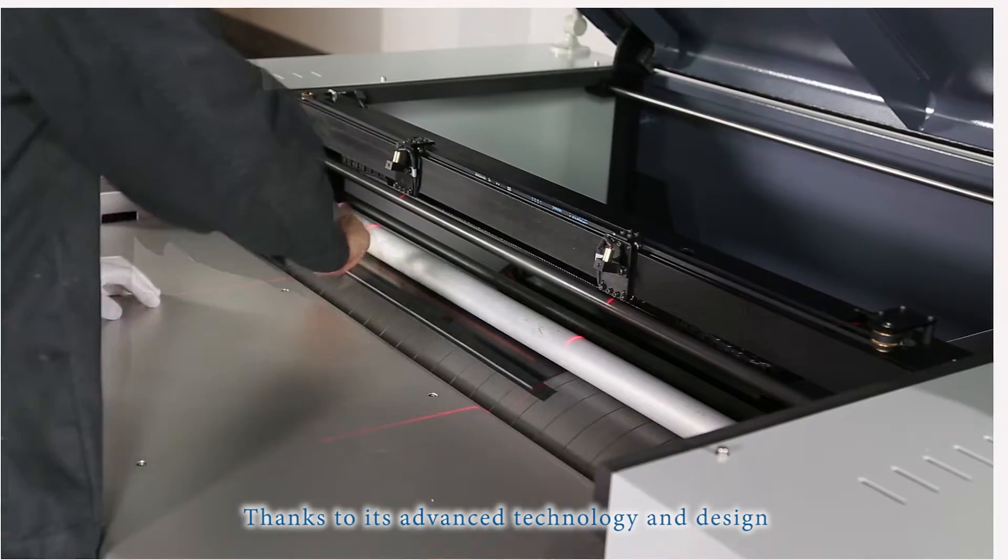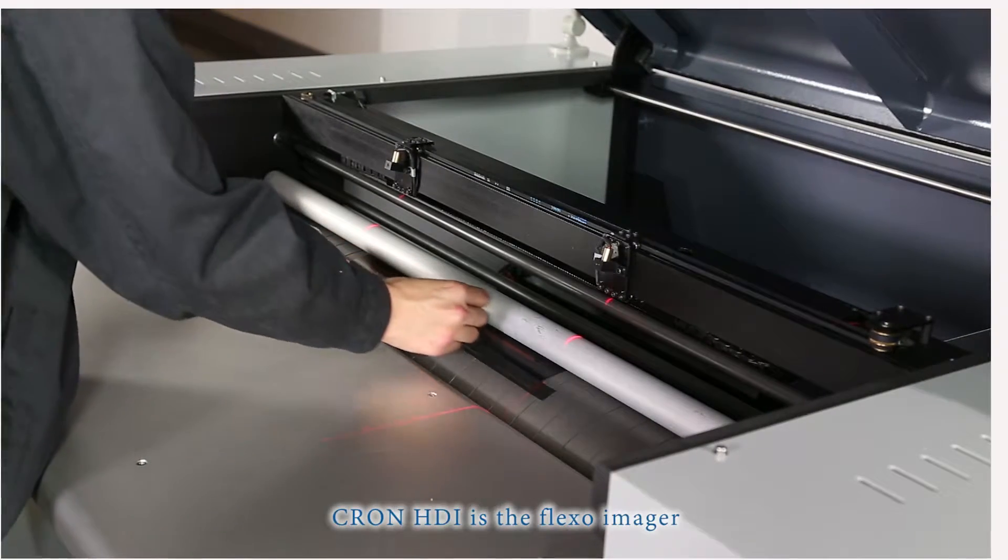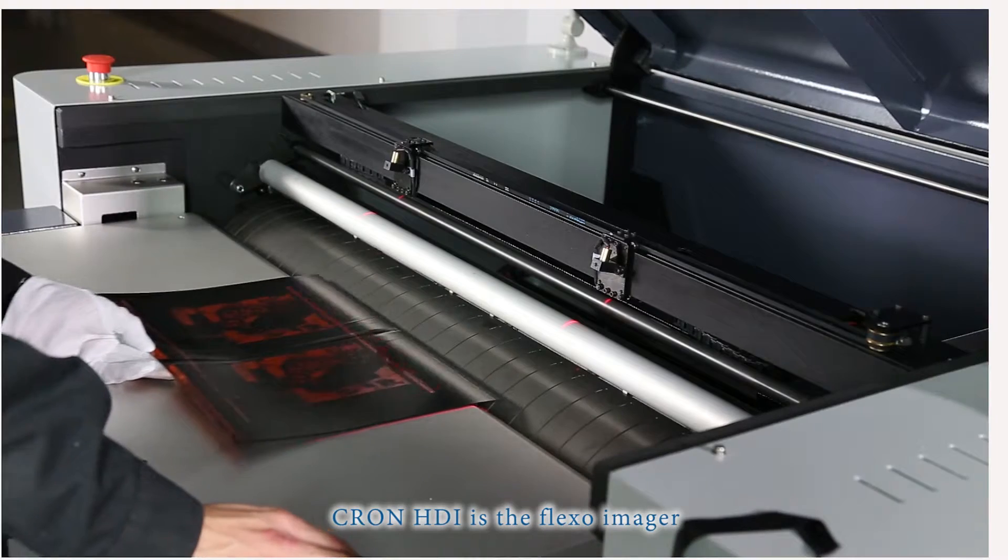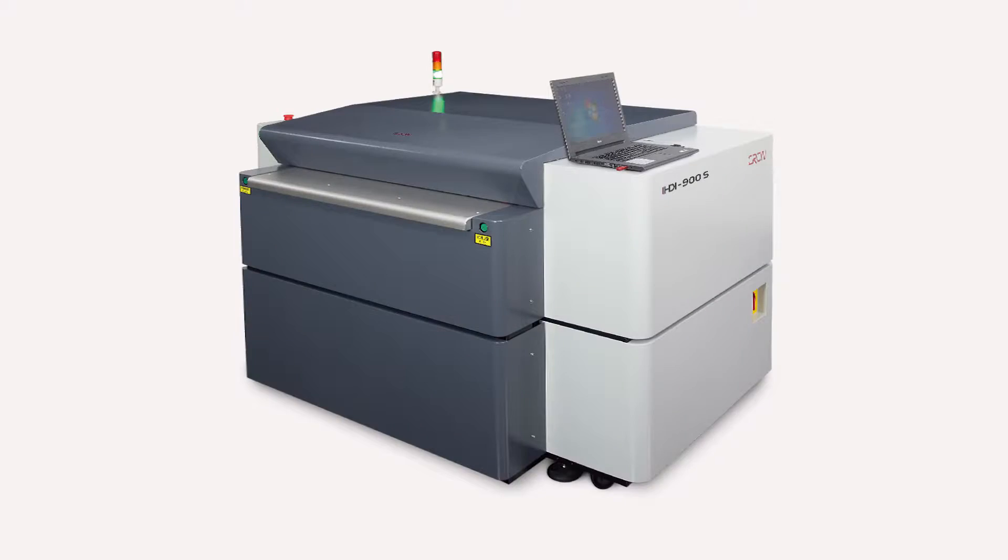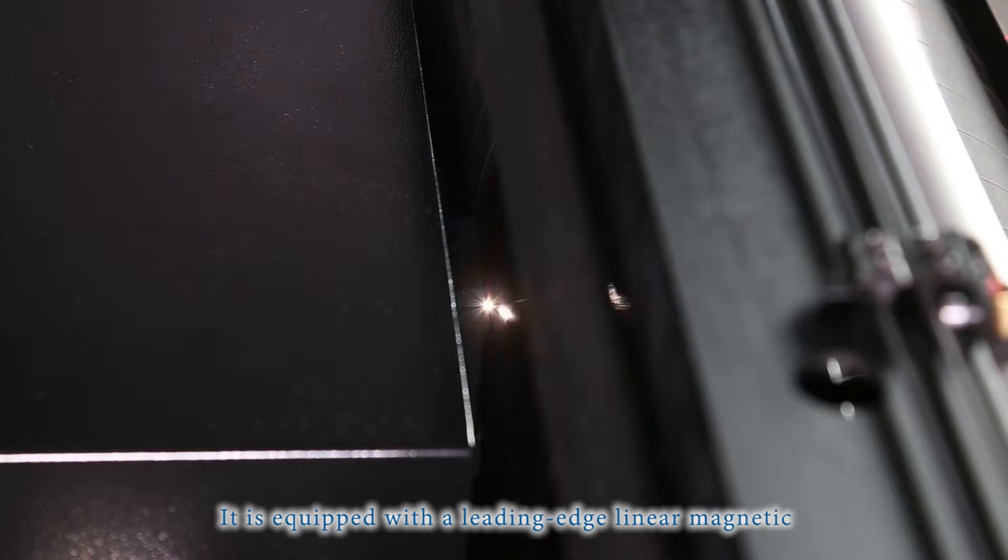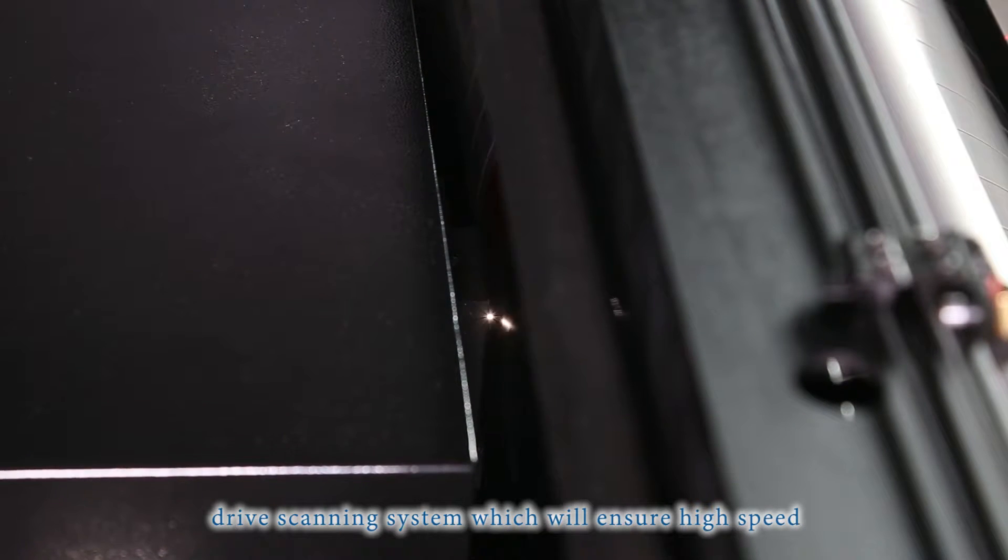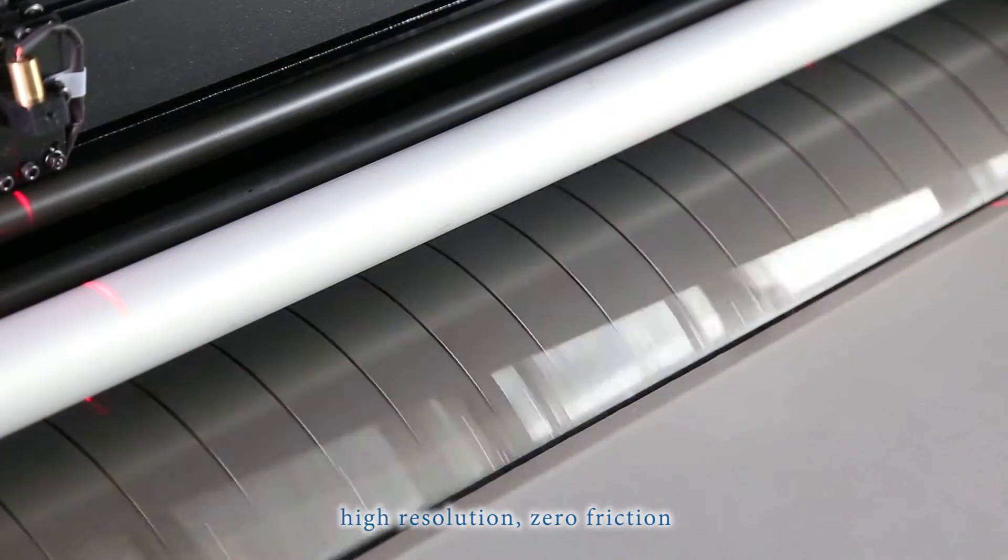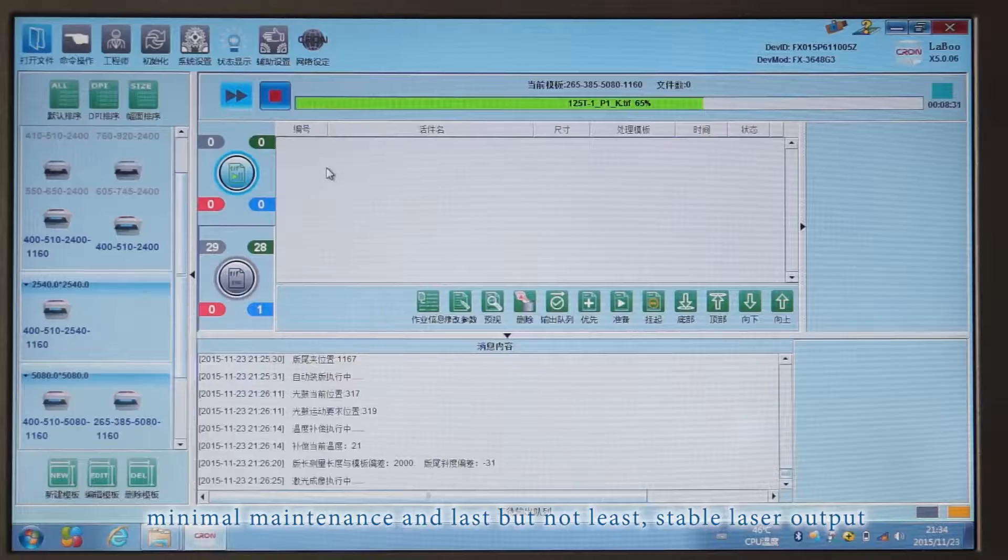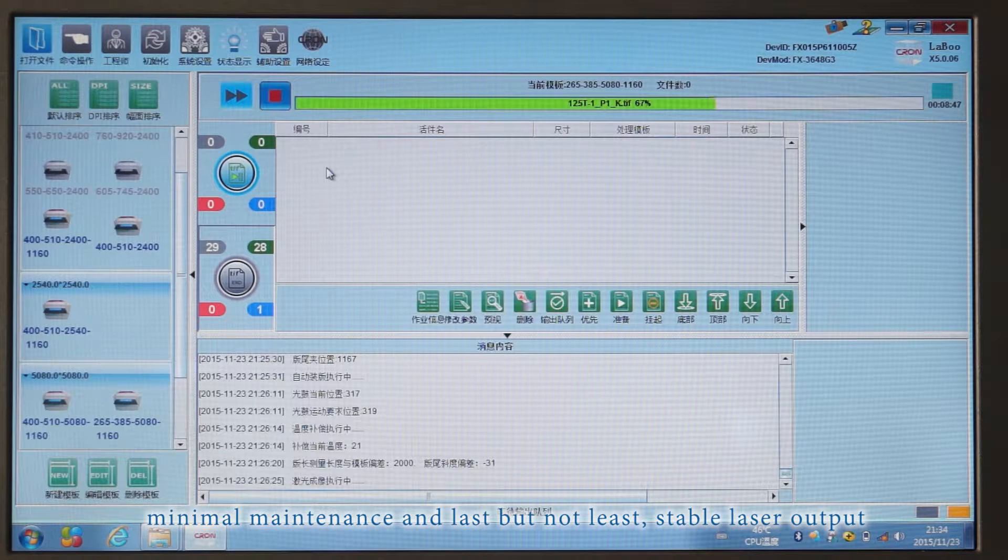Thanks to its advanced technology and design, Crone HDI is a flexo imager with the smallest footprint in the market. It is equipped with a leading edge linear magnetic drive scanning system which ensures high speed, high resolution, zero friction, minimal maintenance and stable laser output.